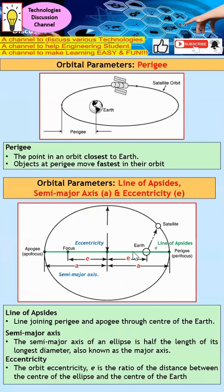Next, I'm going to describe perigee. Perigee is the closest point to the Earth. As you can see from this diagram, this point is actually closest to the Earth — this is what we know as perigee. The objects at perigee move the fastest since they are closest to the Earth.